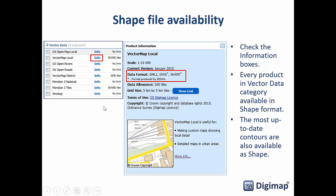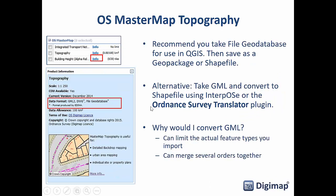For DTM or DSM data, the ASC format is the one you want to choose for QGIS — that's the ASCII grid, and it produces the best results when you open it in QGIS. Looking at shapefile availability, things like VectorMap Local are available in GML, DWG, and shapefile — so you'd pick the shapefile. Other things like contour data are available as shapefiles, and pretty much every product in the vector data category in Ordnance Survey, as well as all the geology vector data, is available as shapefile.